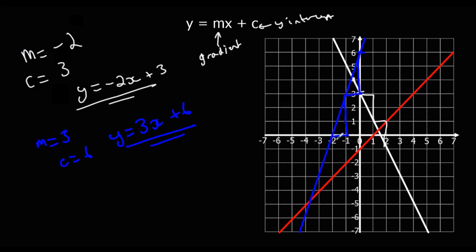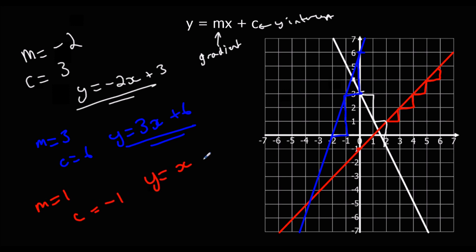And the red line: every one it goes across, it goes up one — nice and simple — so m is one. The y-intercept is at minus one, so c is minus one. Therefore y equals x minus one.